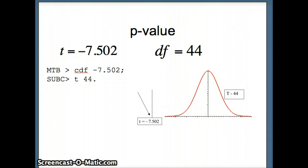So we want to find that p-value. T is negative 7.502, df is 44. How much area is to the left of that? We can ask Minitab to do cdf negative 7.502 with a t with 44 degrees of freedom, and Minitab comes back with 1, 2, 3, 4, 5, 6, 7 zeros, so it's a very small number. I usually just focus on four zeros, so we're going to say that our p-value here to four decimal places is 0.0000.